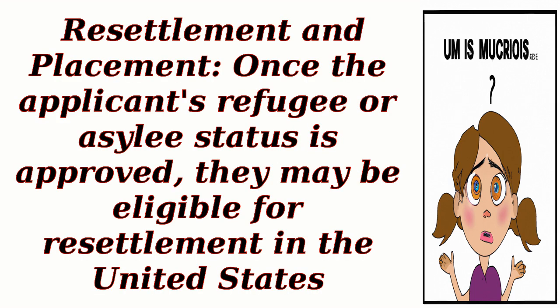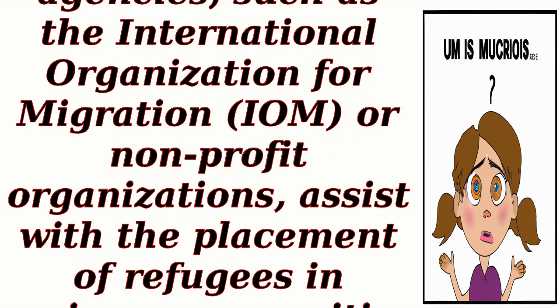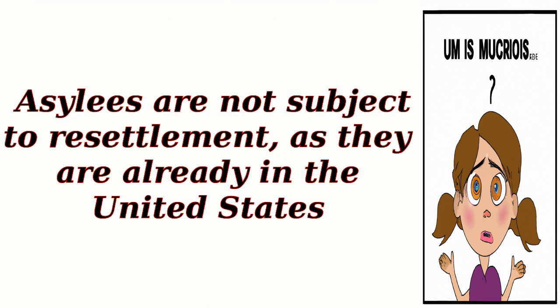Resettlement and Placement: Once the applicant's refugee or asylum status is approved, they may be eligible for resettlement in the United States. Resettlement agencies, such as the International Organization for Migration (IOM), or non-profit organizations, assist with the placement of refugees in various communities across the country. Asylees are not subject to resettlement, as they are already in the United States.